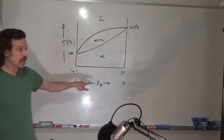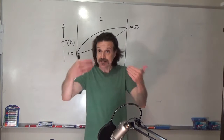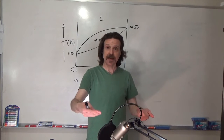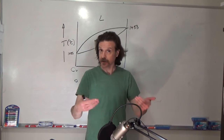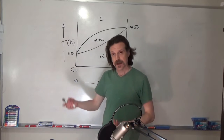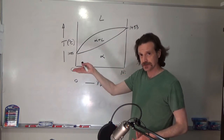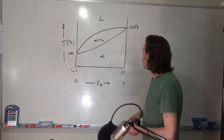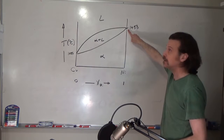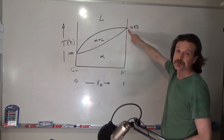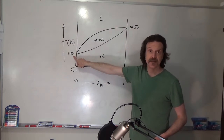If you have pure copper, or pure nickel, or any time you have a pure single component, you know that you heat it up, it melts, you cool it down, it freezes. The melting temperature of nickel is 1453°C. The melting temperature of copper is 1085°C.